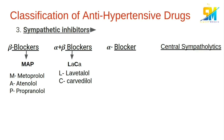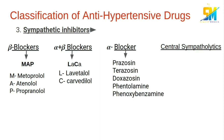In alpha blockers, we have prazosin, terazosin, doxazosin, phentolamine, and phenoxybenzamine. In central sympatholytics, we have clonidine and methyldopa.